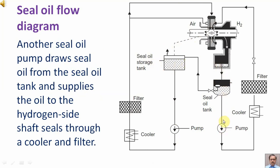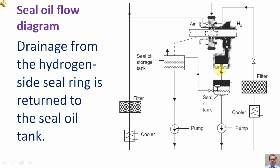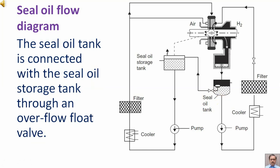Another seal oil pump draws oil from the seal oil tank and supplies oil to the hydrogen side shaft seals through a cooler and filter. Drainage from the hydrogen side seal ring is returned to the seal oil tank.